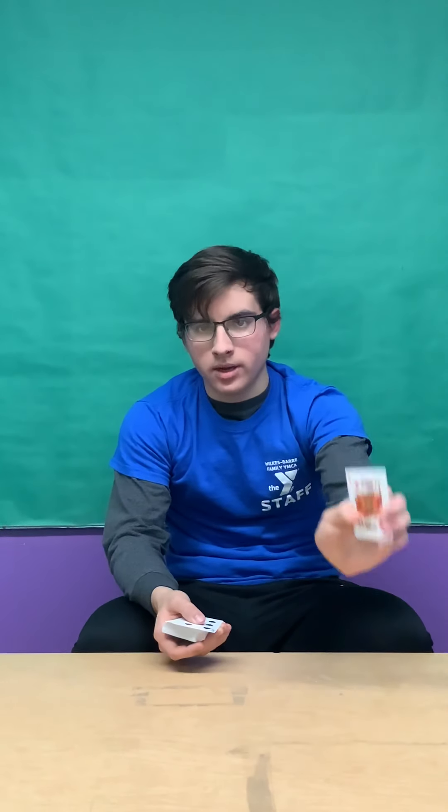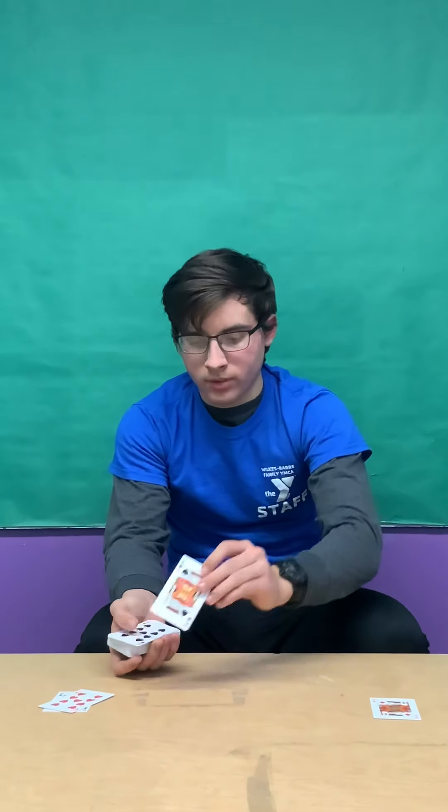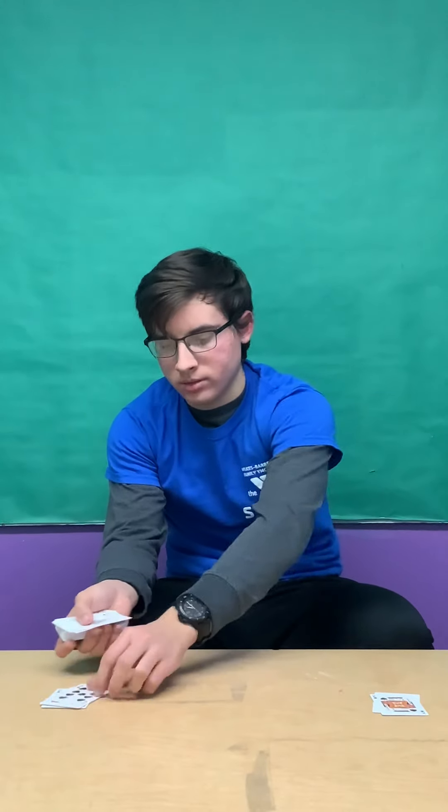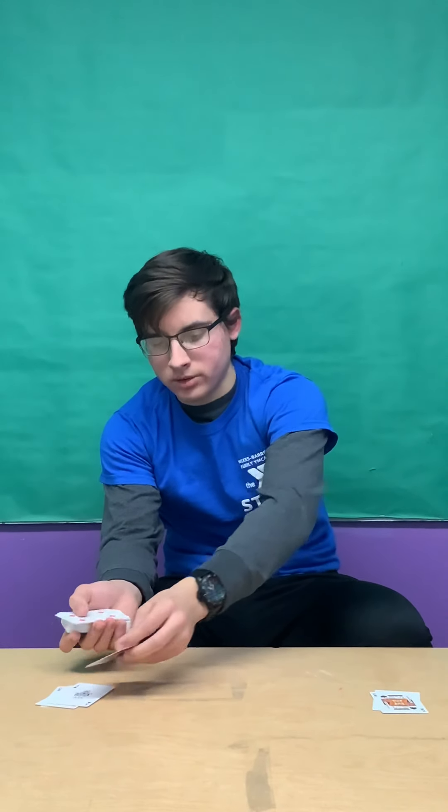So before we get started, we gotta separate all the kings, queens, jacks, and jokers out. So we'll do that now. So that's a king. Gotta take that out. Put all of our good cards to the side over here so we know these are good. Another king. Put that over there. We can keep all our aces. So we'll put the aces on the good pile too.